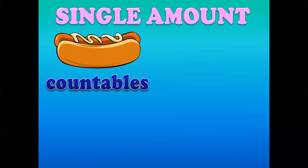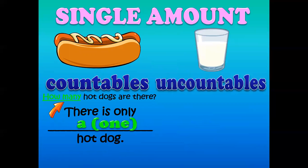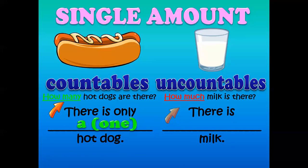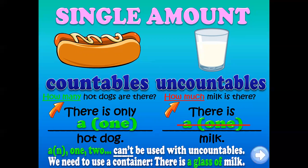Single amounts — countables. How many laptops are there? Remember, countables you can count. There is only one laptop. For uncountables: how much milk is there? Milk is uncountable. You cannot say 'there is one milk' — no. For uncountable nouns, you need to use a container. For example: there is a glass of milk. In English, you need to say a glass of milk. It doesn't happen with countables — you can say there is only one laptop. But with uncountables, you need a partitive, a container — you need to refer to a container.